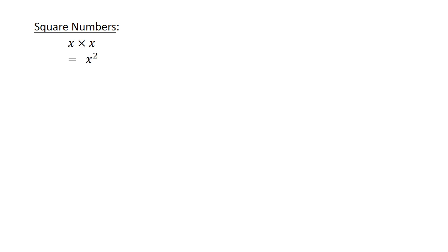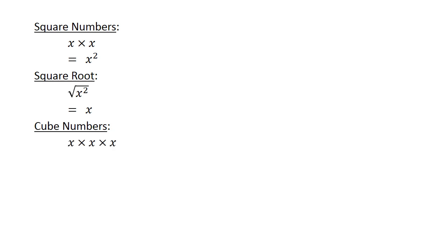Square numbers: x times x equals x to the power of 2. The square root of x to the power of 2 equals x. Cube numbers: x times x times x equals x to the power of 3. Cube root: x to the power of 3 equals x.